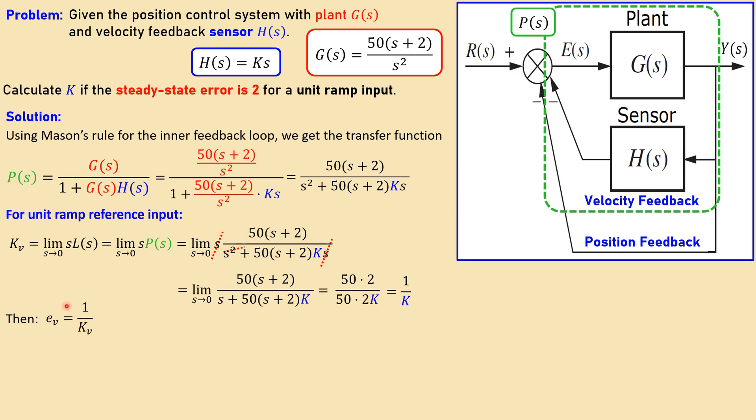Then we have the following: the velocity error, which is of course due to that ramp input, so this 1 over Kv, which is then the velocity error constant. This is then 1 over K. So that means 1 over 1 over K is just K. So that means your velocity error will be equal to K, which is interesting.